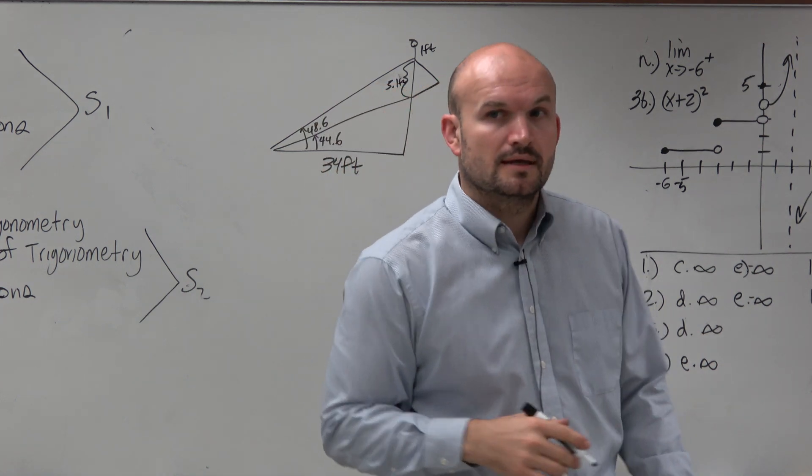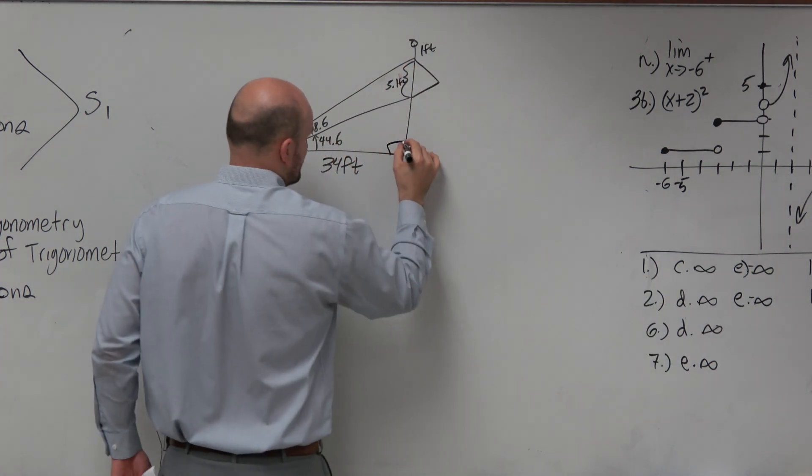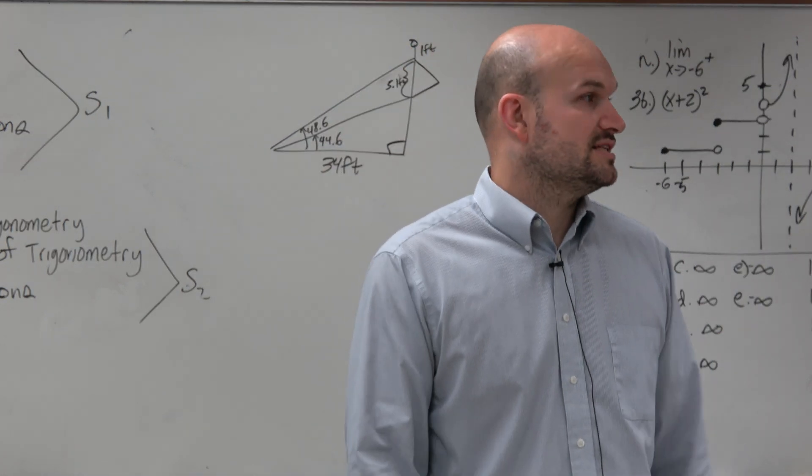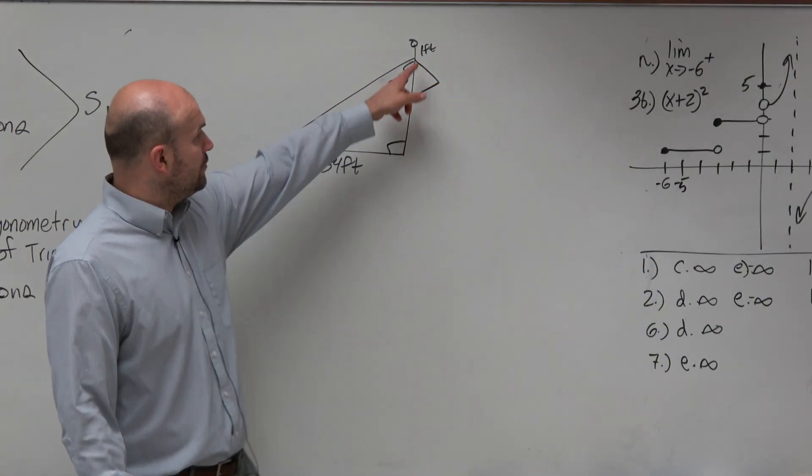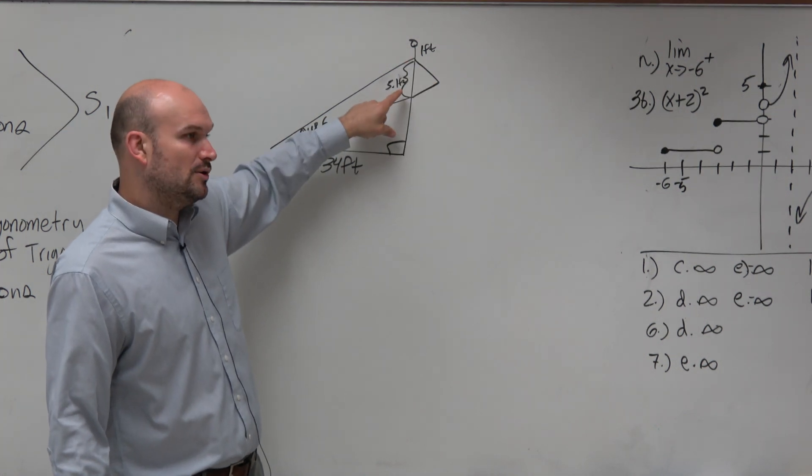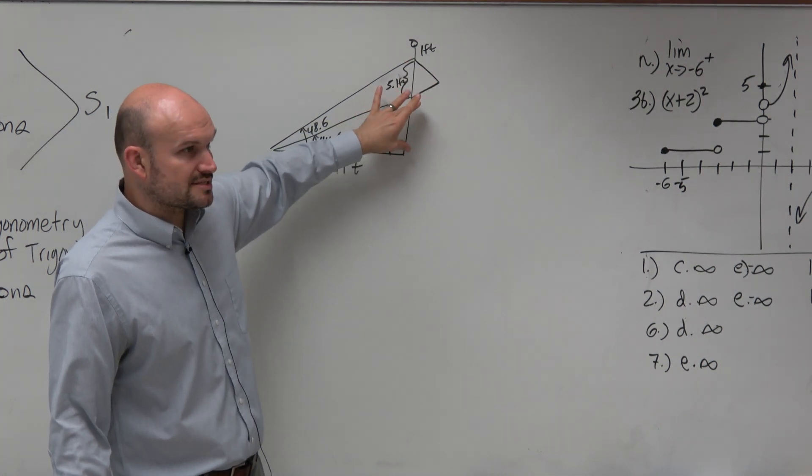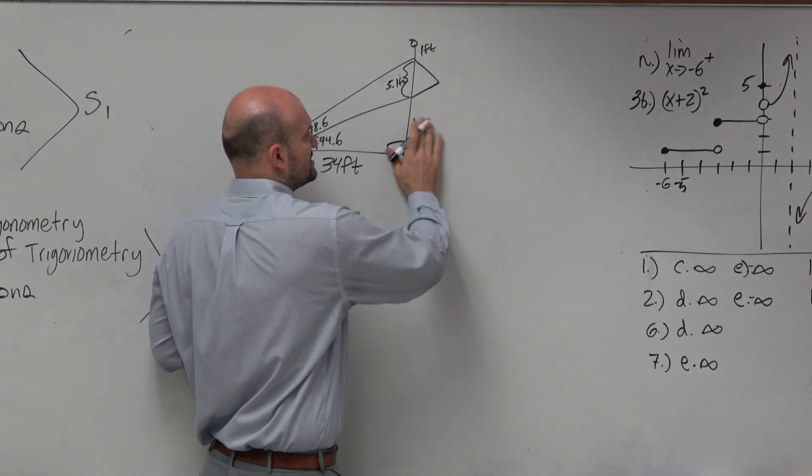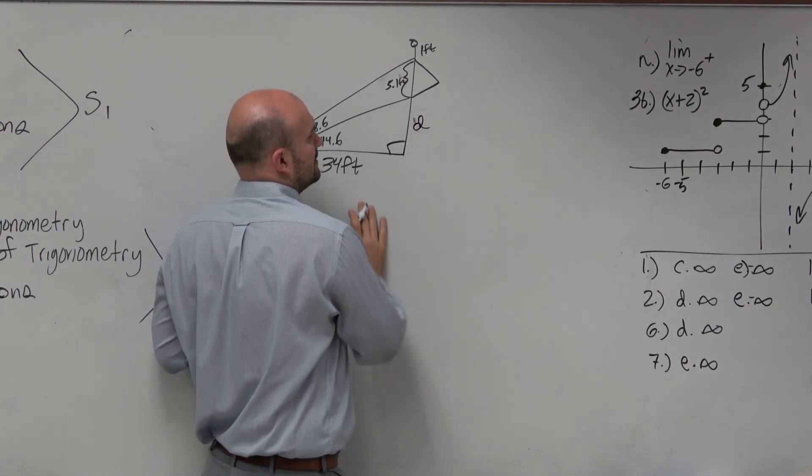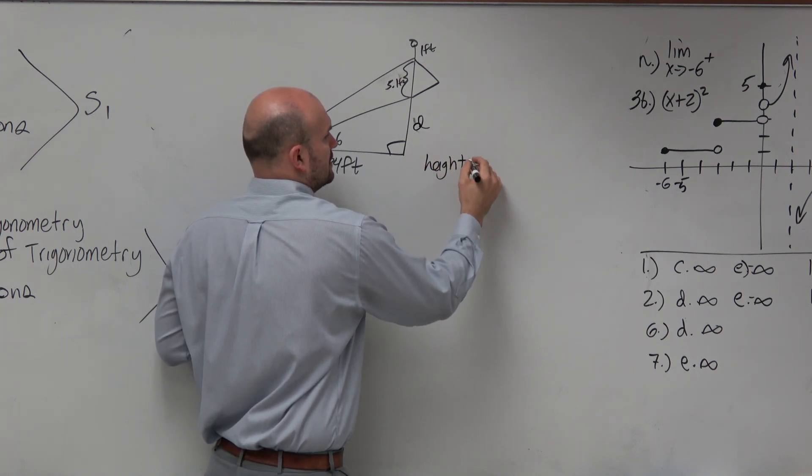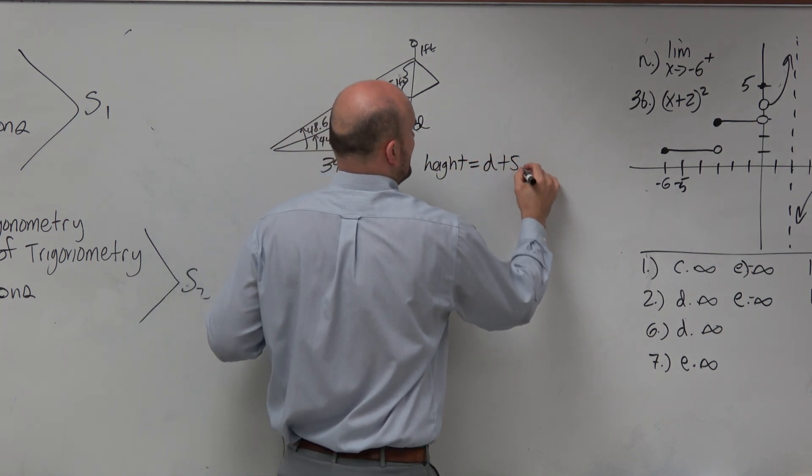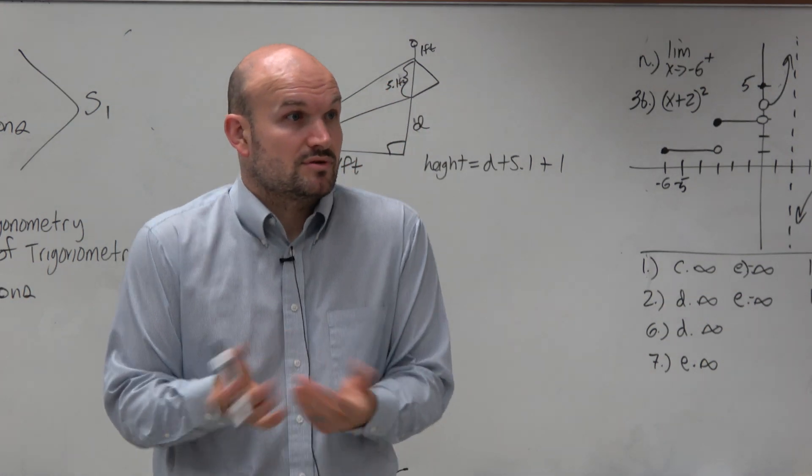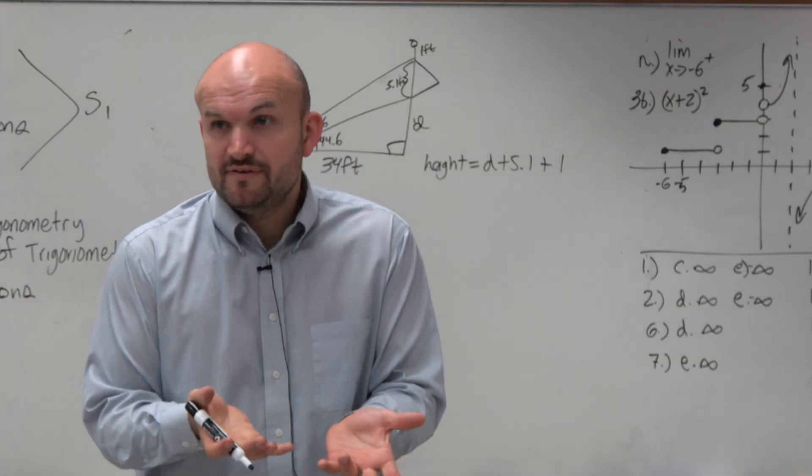And we've also created a right triangle. So we know we can use trig here. So they want us to find the height of the flagpole. Now, what is it? We have one foot there, we have 5.1 feet here, we just don't know this, right? So wouldn't you guys agree? Let's just call this distance, let's call this d. The height is equal to d plus 5.1 plus 1. So why don't we just find d? Do we have enough information to find d?